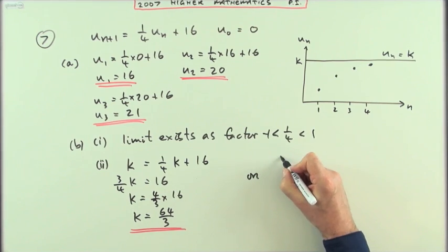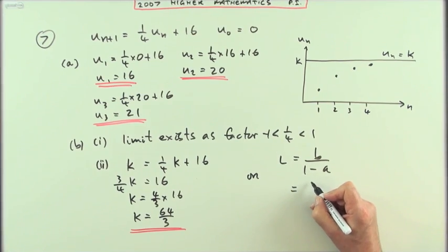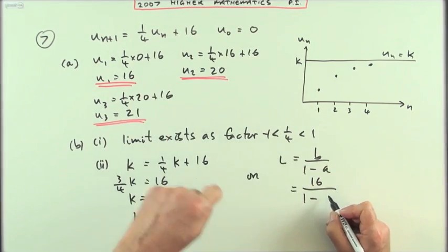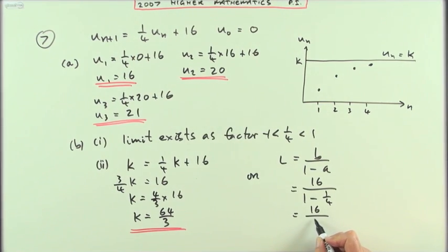Or if you wanted, you could put down that limit formula: B over 1 minus A. B being the number which has been added, A being the multiplying factor. So you've got 16 over 3 quarters, and then resolve that by multiplying the top and the bottom by 4, or by thinking instead of dividing by a fraction, take it across and multiply.